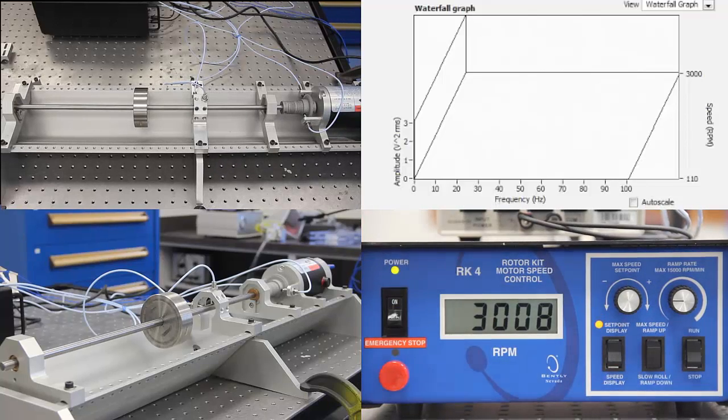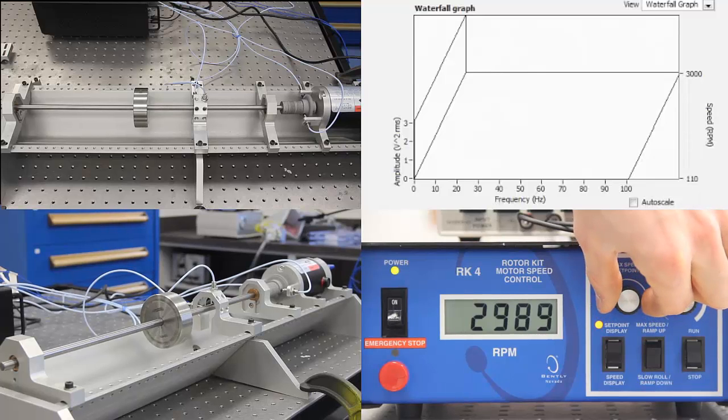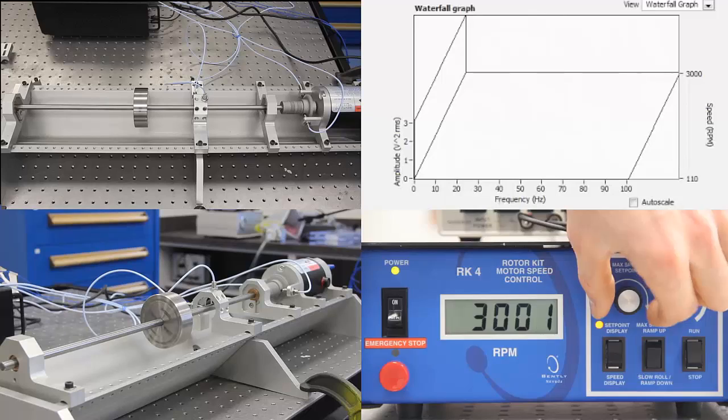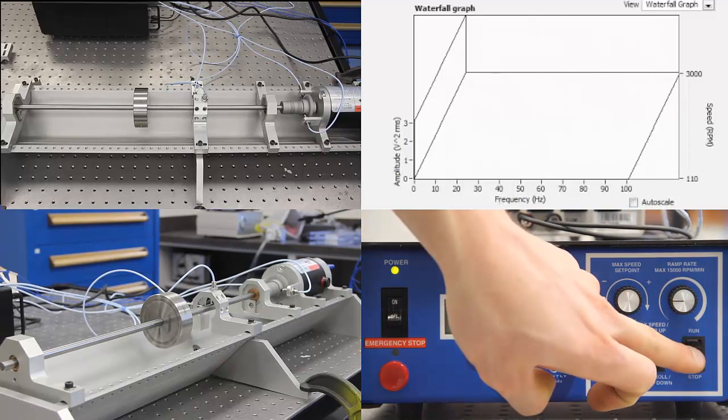This video demonstrates a lab-scale rotor dynamic experiment associated with the shaft disc system. Four different windows can be seen in this video. On the left, two different views of the rotating shaft and disc system are shown.